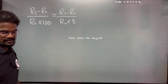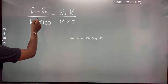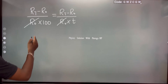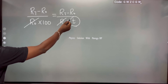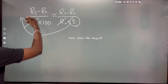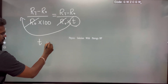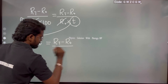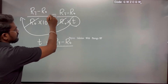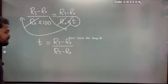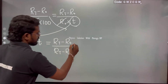So the temperature T equals (RT - R0) divided by (R100 - R0), multiplied by 100. We set up the numerator and denominator accordingly and do the division to get the final answer.